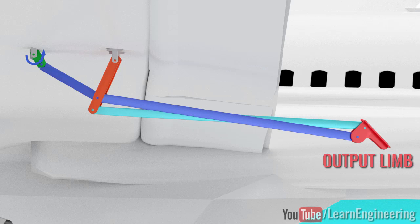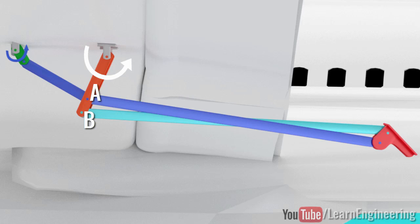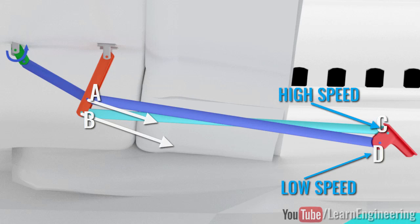Let's concentrate on points A and B on the rocker arm. It is clear that point B will have a higher speed than point A. This speed will be transferred to points C and D of the limb via the connecting arms. In short, point C of the limb moves faster than point D. This motion will make the output limb turn as shown.